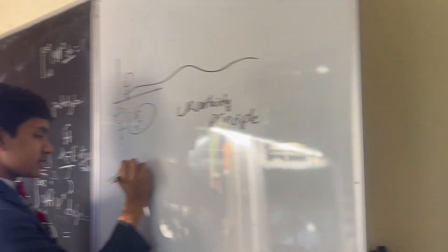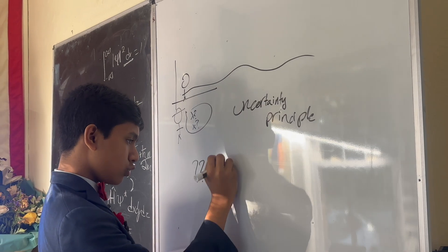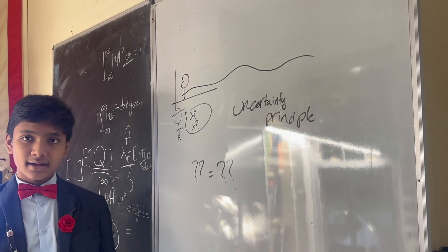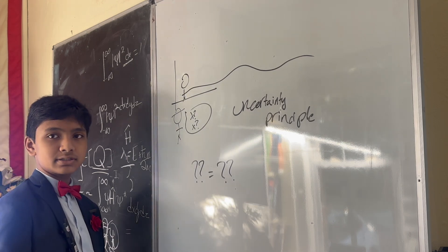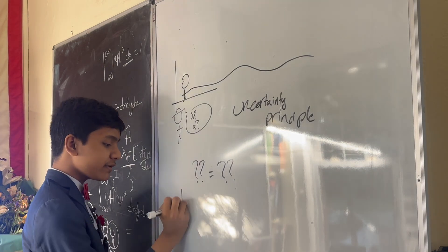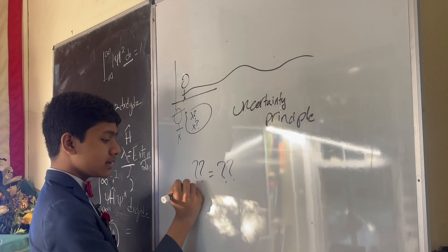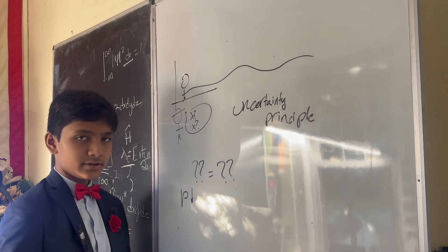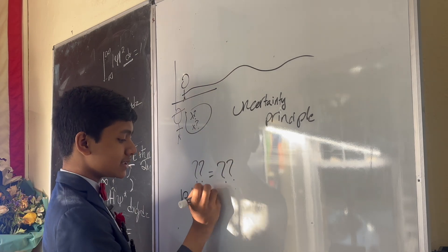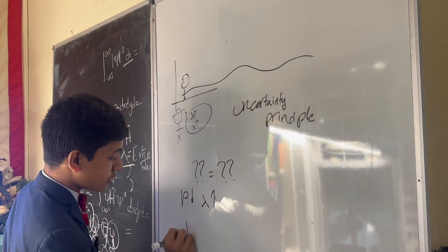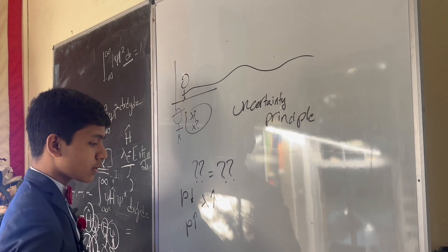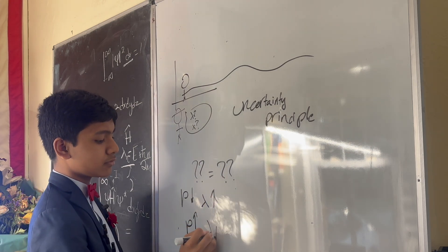But, there's a nice equation at the end of the day that perfectly encapsulates everything that the uncertainty principle tries to tell us. It perfectly encapsulates the fact that the lower precision you make your momentum, the higher precision you give your wavelength. In the same way, the higher precision you give your momentum, the lower precision you give your wavelength.